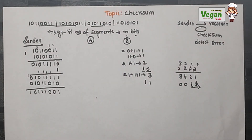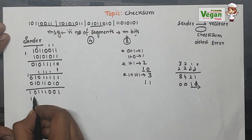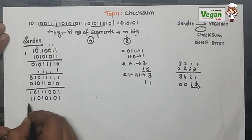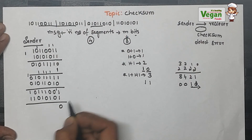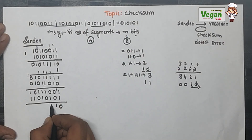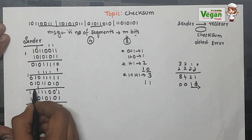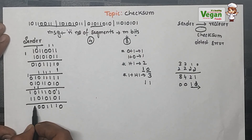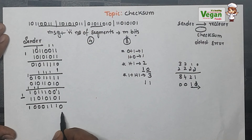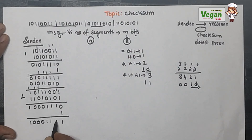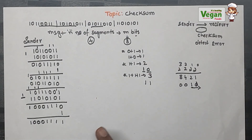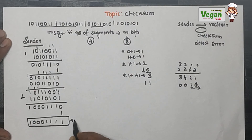Now we have added three frames. We are left with only one frame: 1, 1, 0, 1, 0, 1, 0, 1. Adding: 1+1=2, sum=0, carry=1. Then 1+0+0=1. Then 0+1=1. Then 1+0=1. Then 1+1=2, sum=0, carry=1. Then 1+1+0=2, sum=0, carry=1. Then 1+0+1=2, sum=0, carry=1. Then 1+1+1=3, sum=1, carry=1. When left with carry 1 at the end, we add it to the least significant bit: 0+1=1, all others remain the same. Now we have added all 4 frames at the sender side and are left with the remainder.